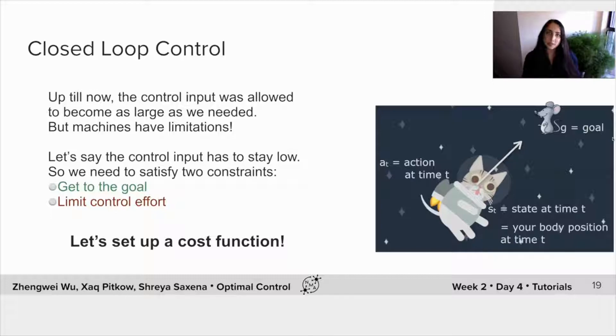But you can see that that may become unrealistic at some point. Machines have limitations too. For example, in the case of a jetpack, it may be how much fuel we can consume in one time step. So we're going to consider this constraint of a realistic or limited control effort in order to get to our goal.